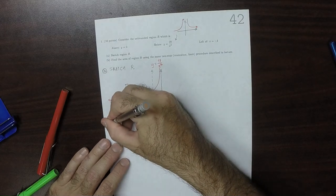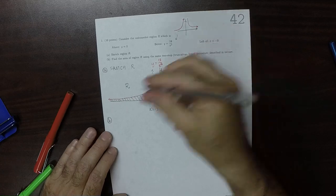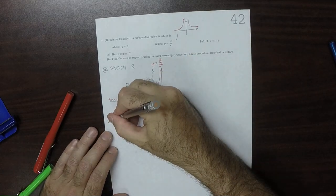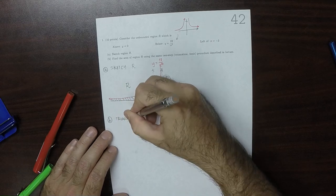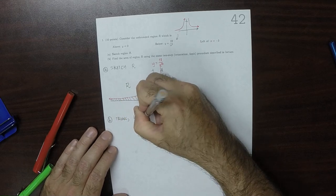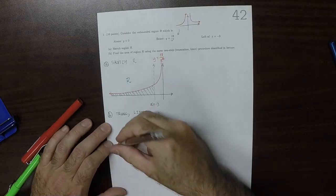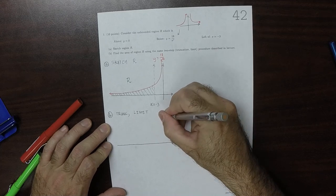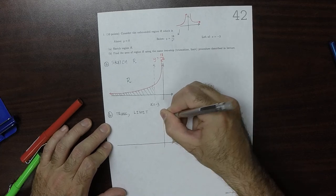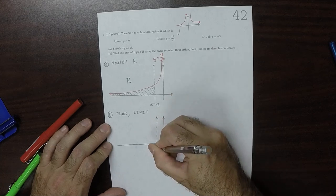So for part B, the two-step truncation limit procedure. So truncation limit. So what we'll do is, here we'll hold this at negative 3.